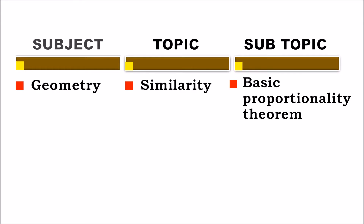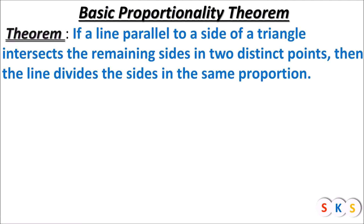Dear students, today we will see Chapter 1: Similarity. In this chapter we are going to learn about the Basic Proportionality Theorem. The statement of this theorem is: if a line parallel to a side of a triangle intersects the remaining sides in two distinct points, then the line divides those sides in the same proportion.